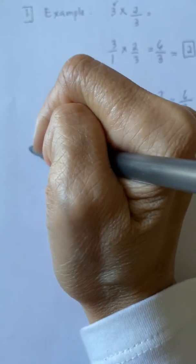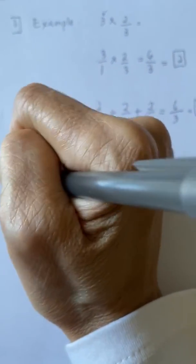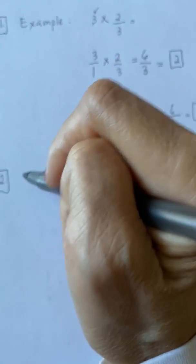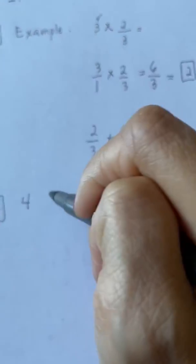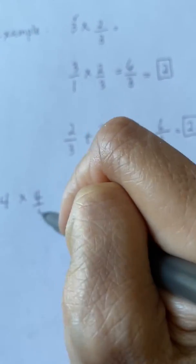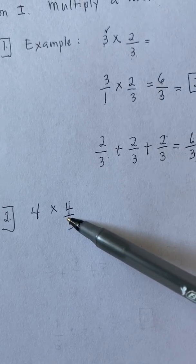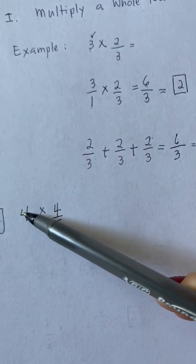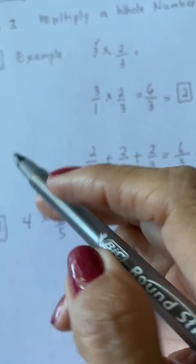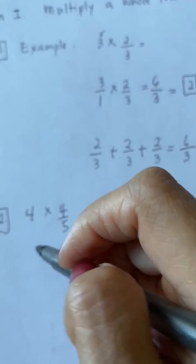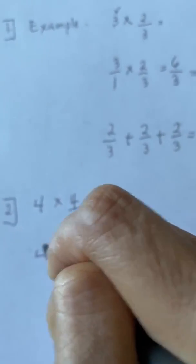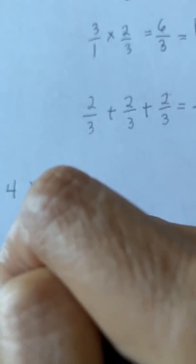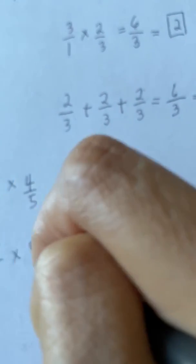So I will have here example 2. So we will do 4 times 4 fifths. Again, your 4 fifths is your fraction. The 4 is your whole number. So we will make 4 a fraction by writing down 1 as the denominator.